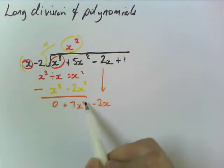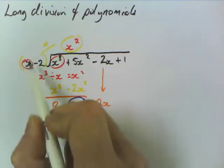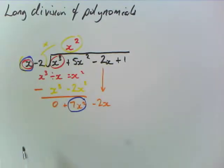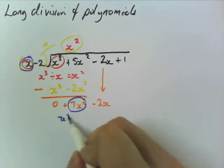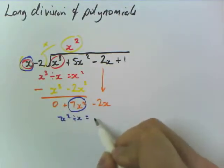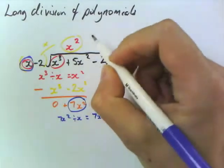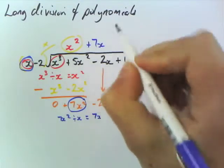So now we go, what's 7x squared divided by x? And we decide, so 7x squared divided by x, that is 7x. And we write that up here, so plus 7x.